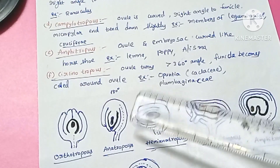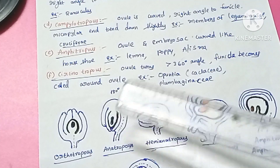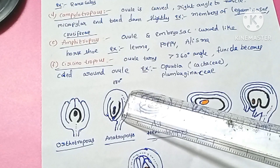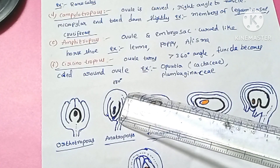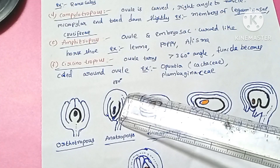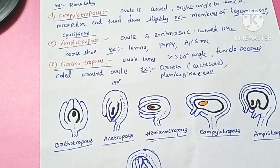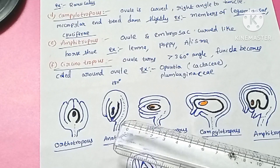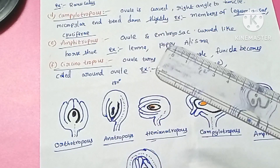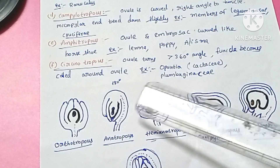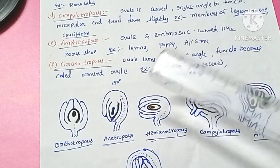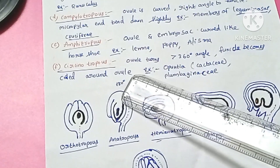In the anatropous ovule, the micropylar end is close to the hilum. Nearly 82% of angiosperms have this anatropous ovule, making it the most common type. In our lab study, we will generally find anatropous ovules.